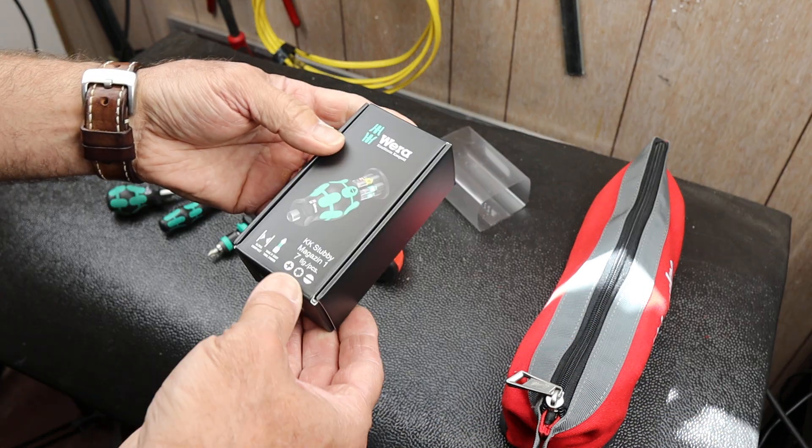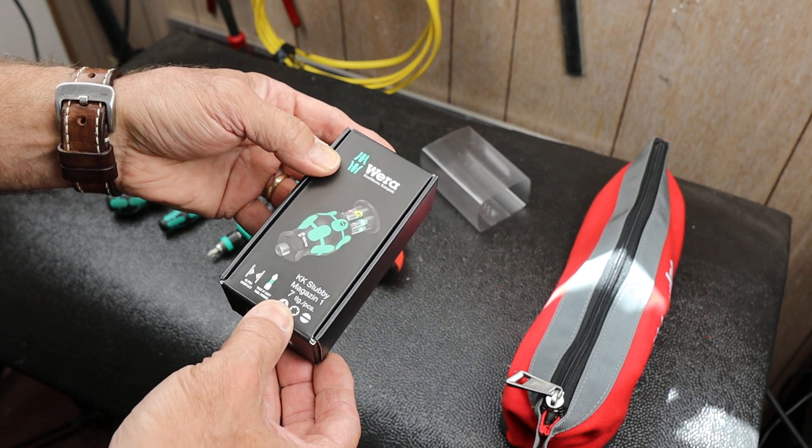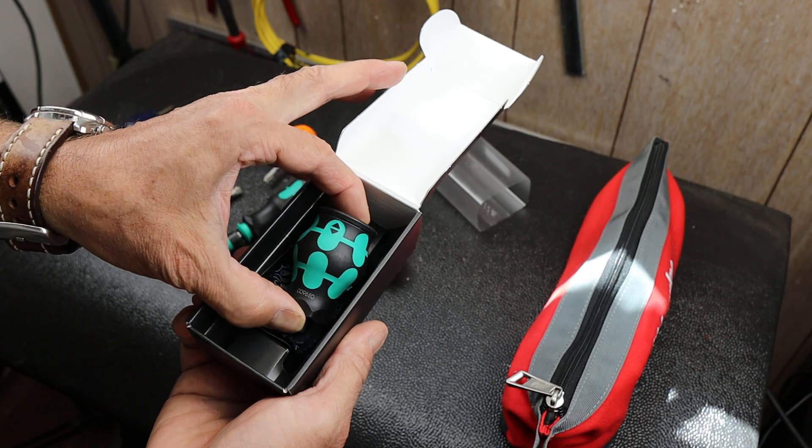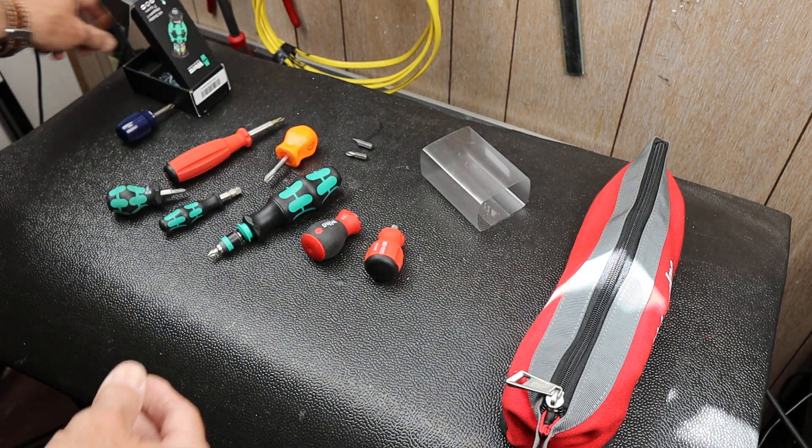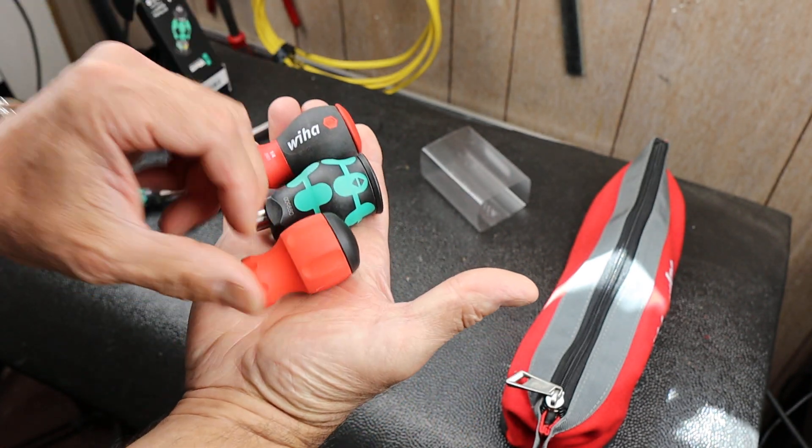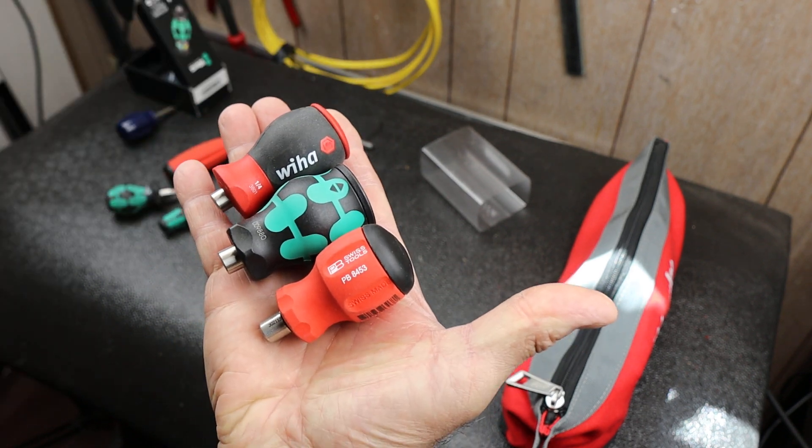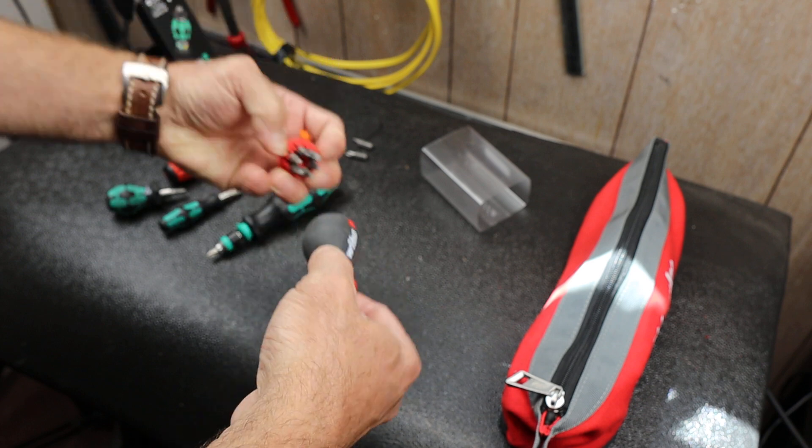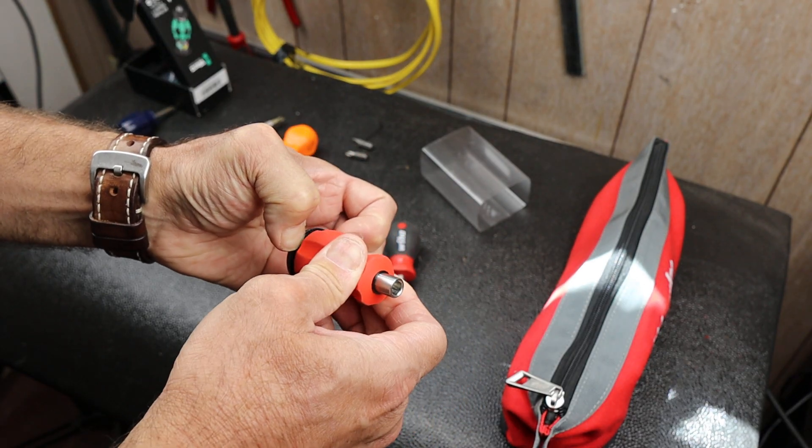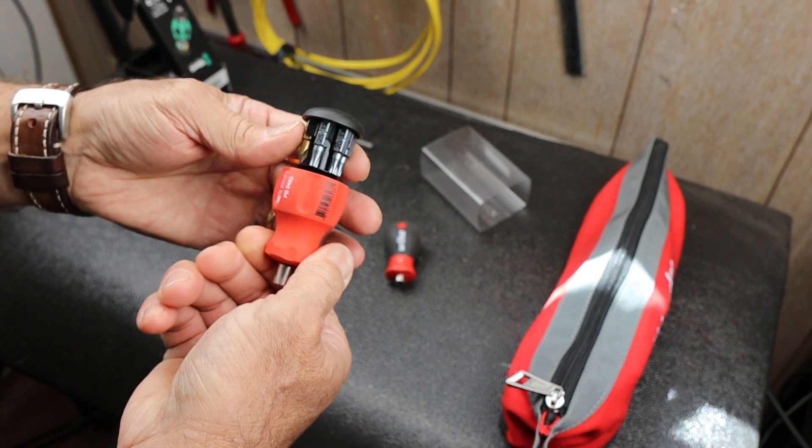Anyway, it's the Vera KK stubby magazine one, seven piece. What this thing is is basically a stubby bit driver kind of like the Wiha or the PB Swiss that I have. Basically the Wiha has a carousel that pops out. The PB Swiss has this very nicely machined, smooth clicking carousel that remains in position.